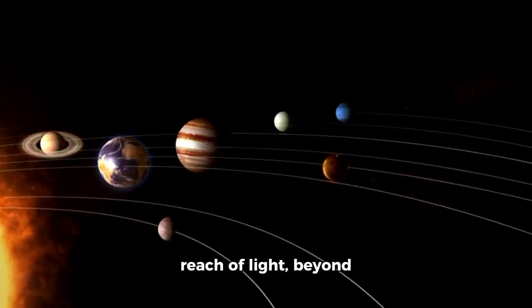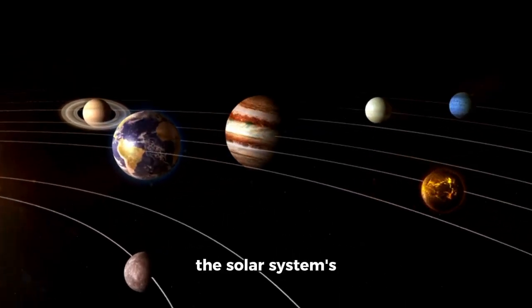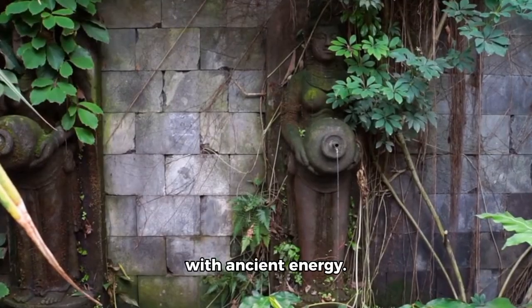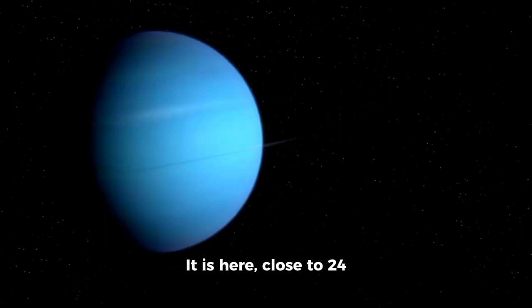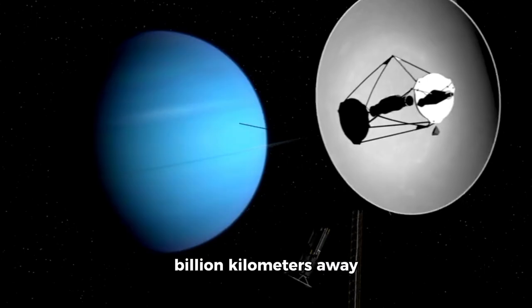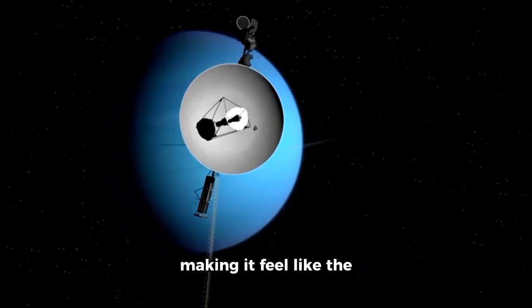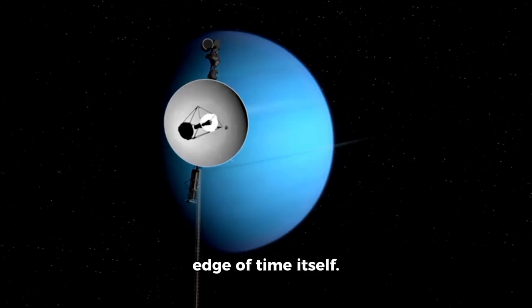A location beyond the reach of light, beyond the solar system's planets, moons, and winds. A quiet spot that buzzes with ancient energy. It is here, close to 24 billion kilometers away from Earth, where Voyager 1 floats in the dark, making it feel like the edge of time itself.